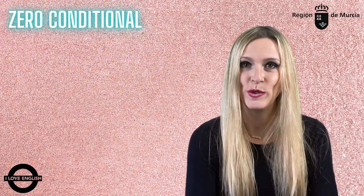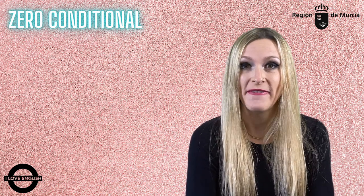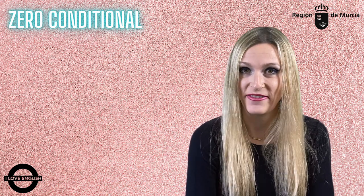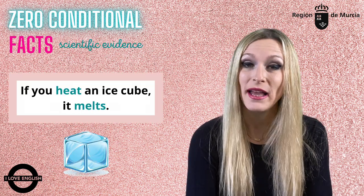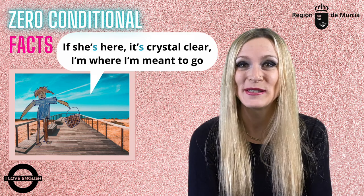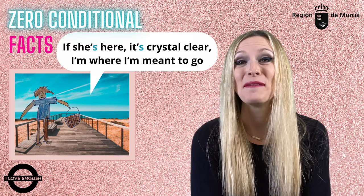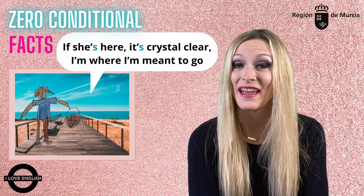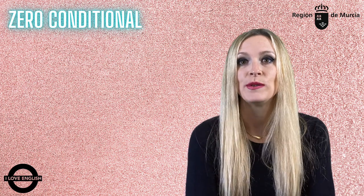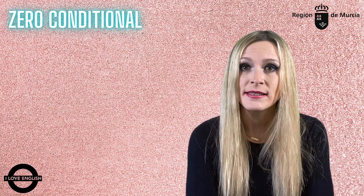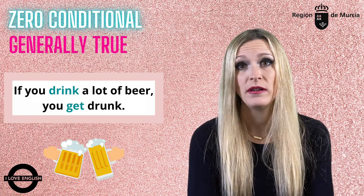Zero conditional, also called factual conditional, is used to talk about facts with scientific evidence, like: if you heat an ice cube, it melts. Or like when Rapunzel's Flynn Rider says, "If she's here, it's clear I'm where I'm meant to go" — a fact, scientific evidence. We also use zero conditional to talk about things that are generally true, like: if you drink a lot of beer, you get drunk.